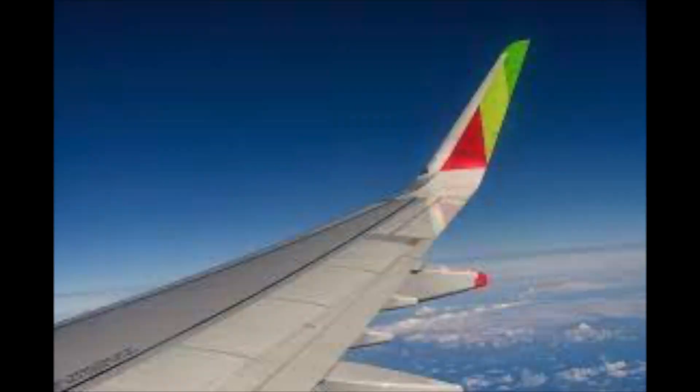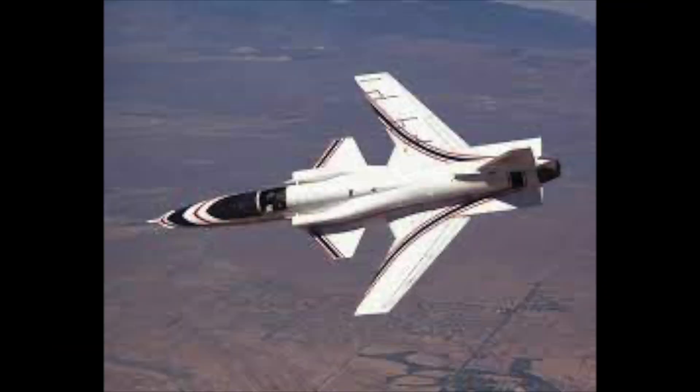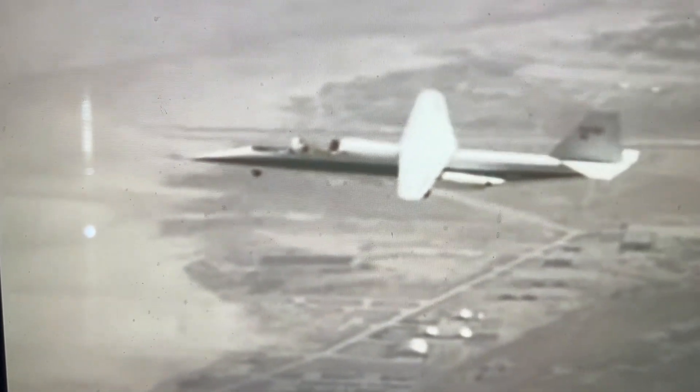Some designs incorporate winglets on the tips to reduce the drag associated with wake turbulence. Some experimental designs produce bizarre looking creatures like this Grumman X-29. Even more unusual is the oblique wing design on this AD-1 built for NASA research.